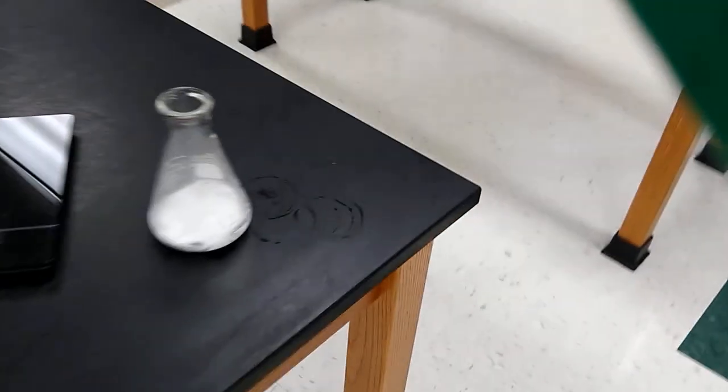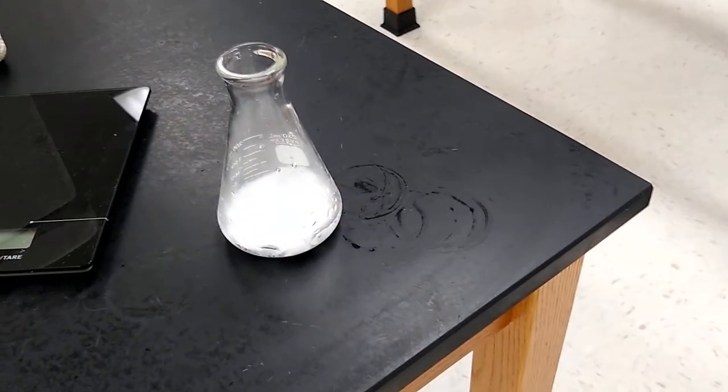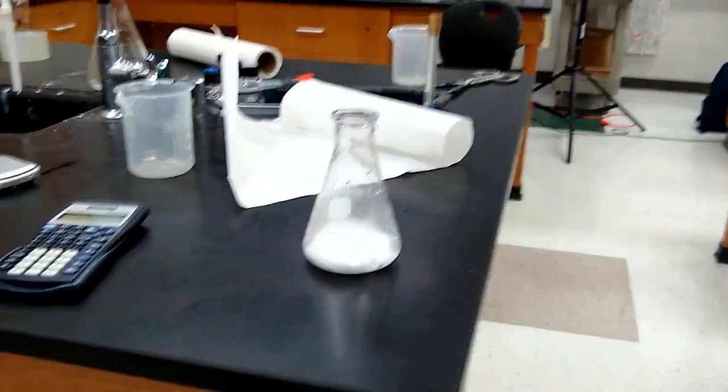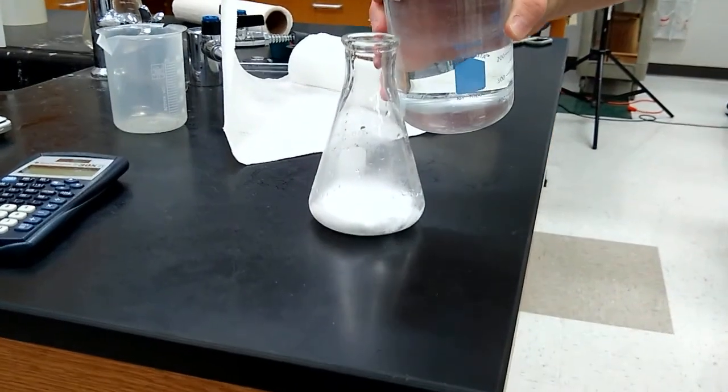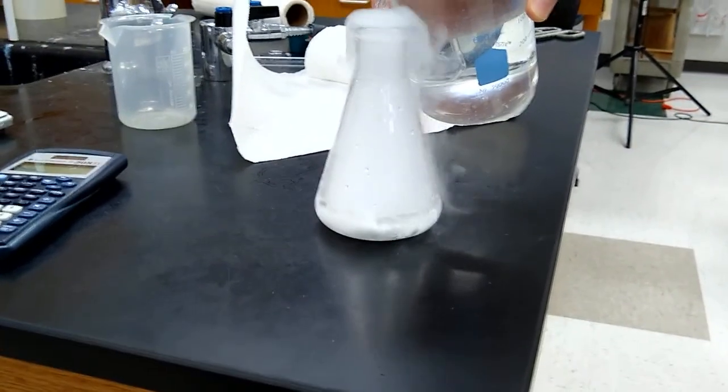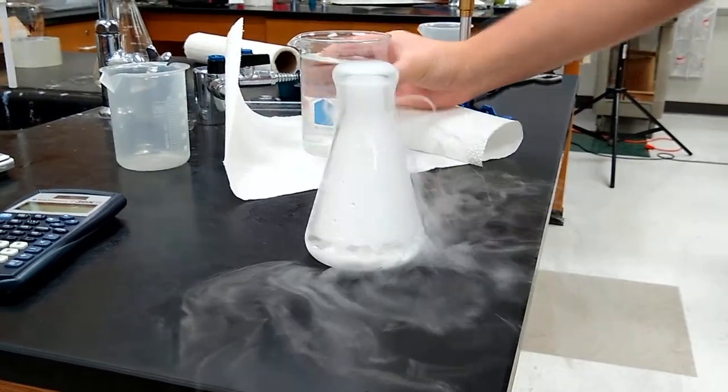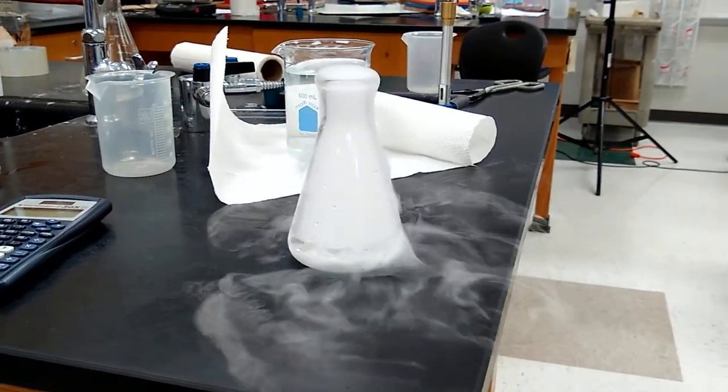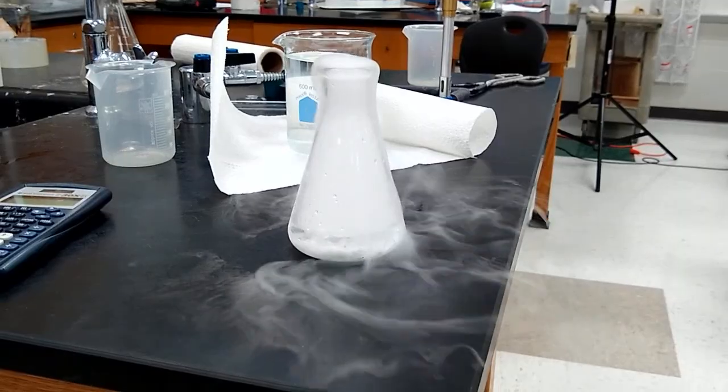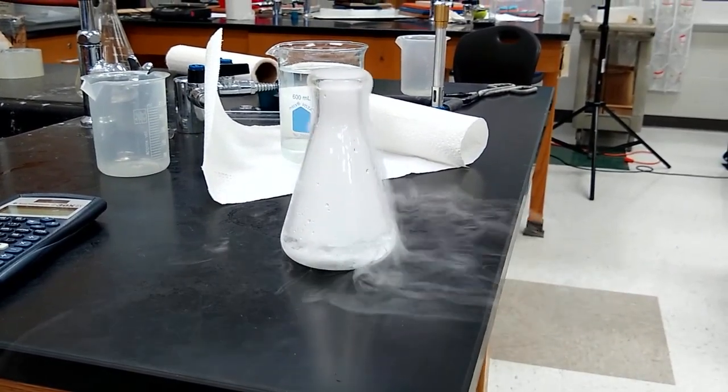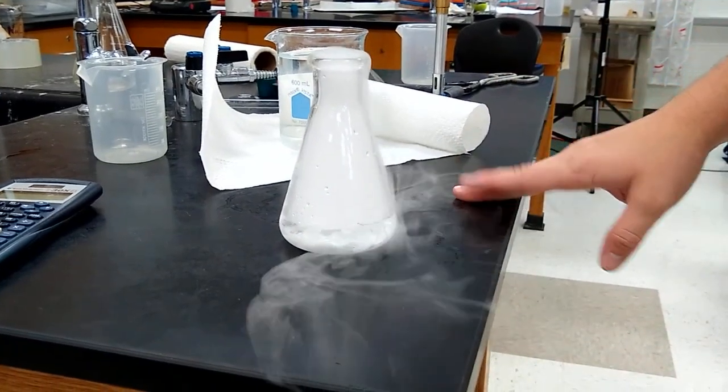We're going to do one other cool thing here with the dry ice. Okay, so the dry ice is sublimating. And we're just going to make that happen a little bit quicker by putting some water on top of it. And here you can clearly see that carbon dioxide is heavier than air because it's falling in the room. And that's our little lab on dry ice.